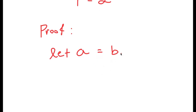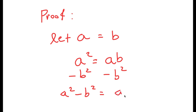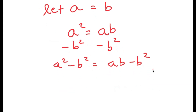Now, if a is equal to b, then this means that a squared is equal to a times b, because at the end of the day b is a, so a times b is a squared. So a squared is equal to a times b — there's nothing wrong with this. Now what I'm going to do is subtract b squared on both sides. So I get a squared minus b squared is equal to a times b minus b squared. And there's nothing wrong with this as well — all I did was subtract b squared on both sides.